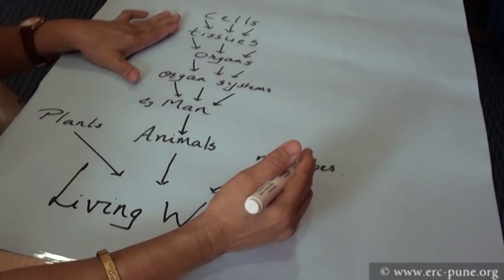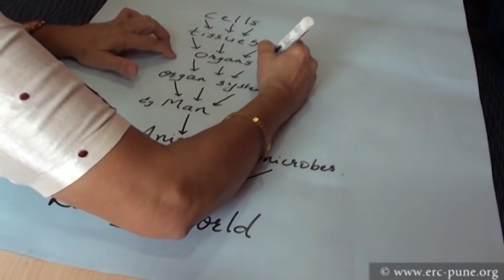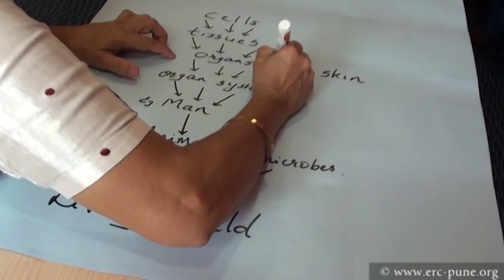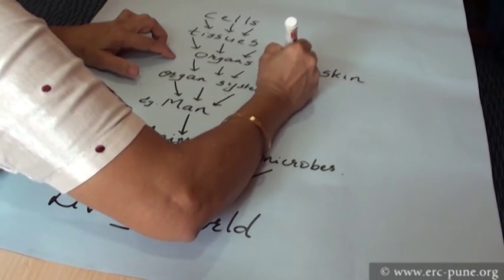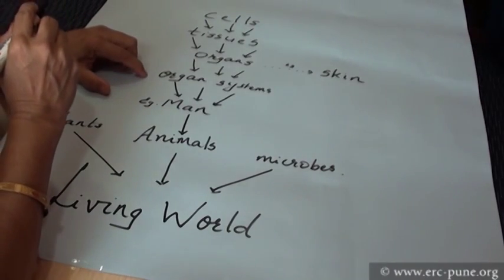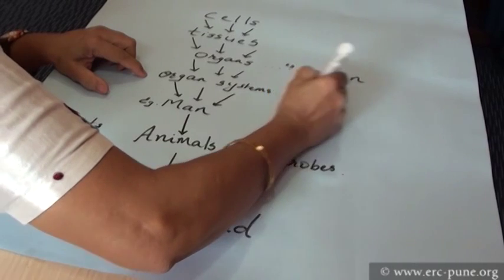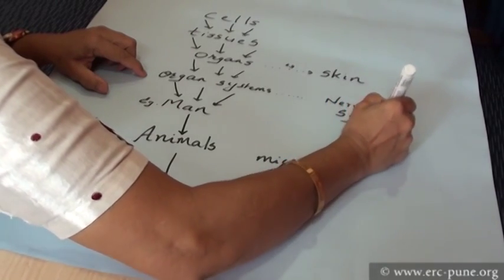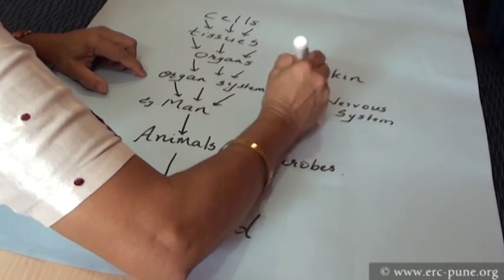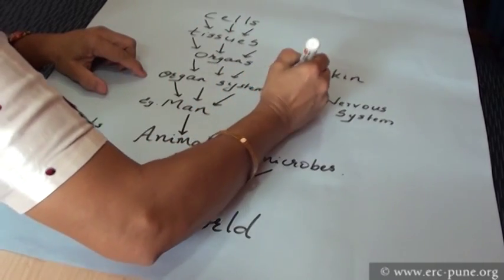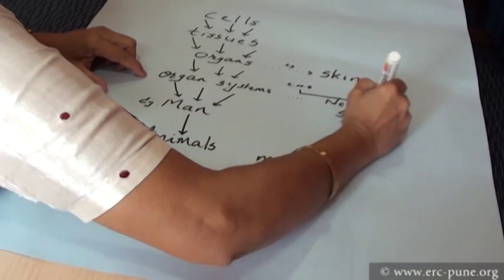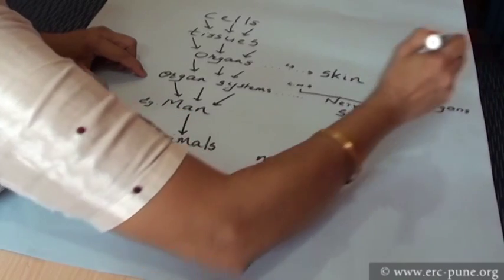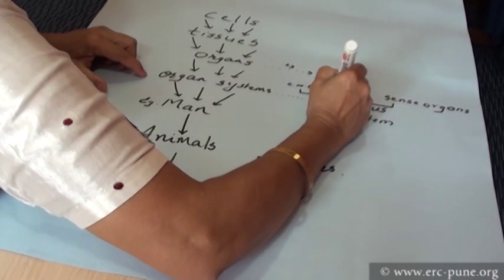Let us take one example of this. The example of organ I wish to take is skin. Which organ system does this belong to? This belongs to the organ system called nervous system. Which are the different parts of the nervous system? The different organs belonging to the nervous system: let us take the central nervous system, the sense organs, and connecting these are the nerves.